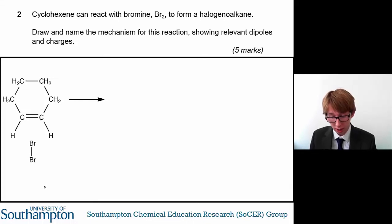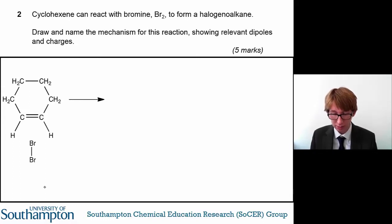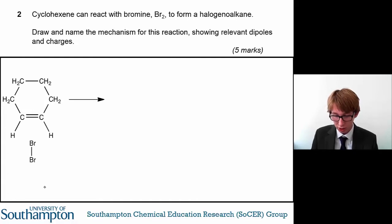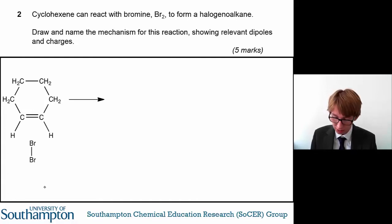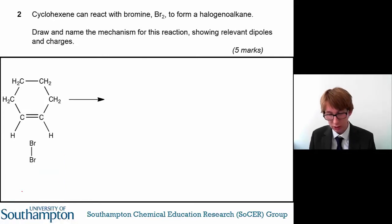Question two considers the reaction of cyclohexene with bromine to form a halogenated alkene. What you need to do is draw and name the mechanism for the reaction, showing all relevant dipoles and charges. This is for five marks, so it's important that you include everything.